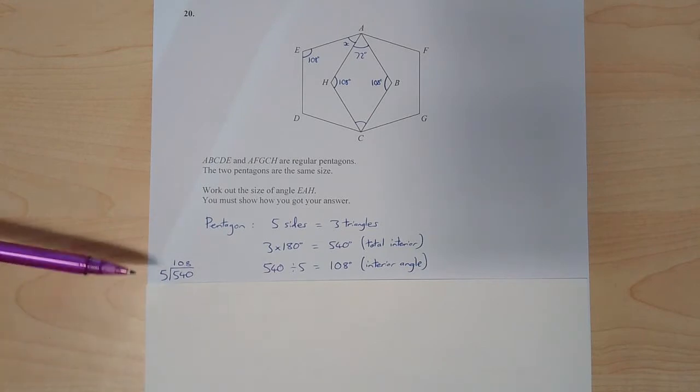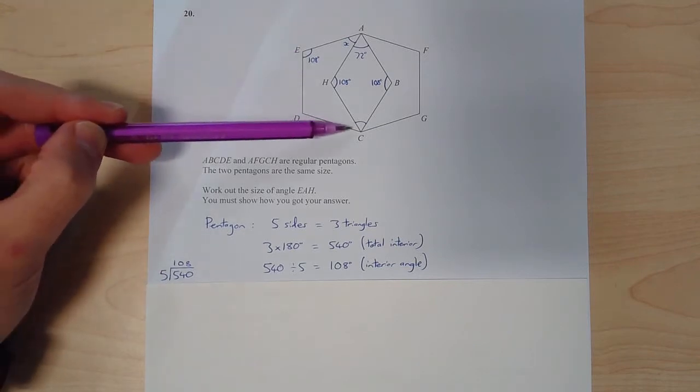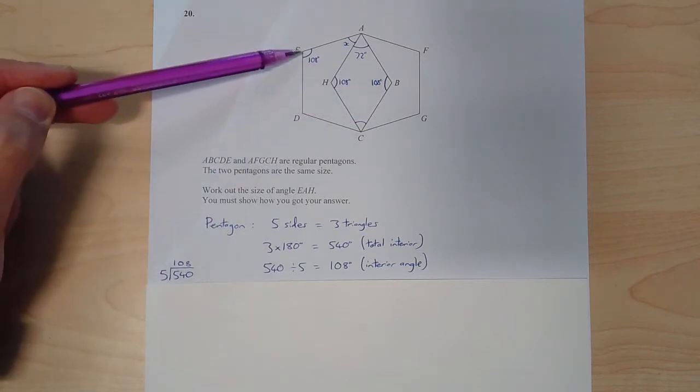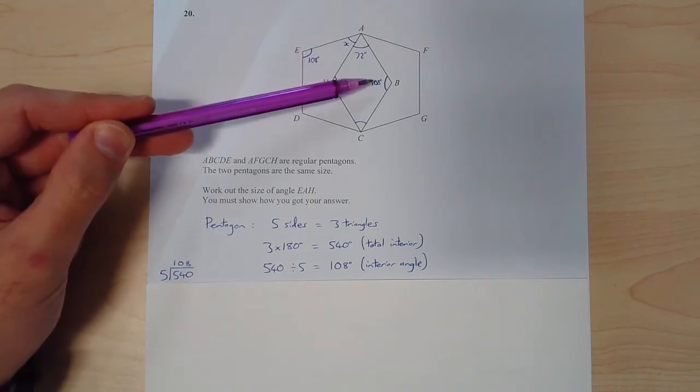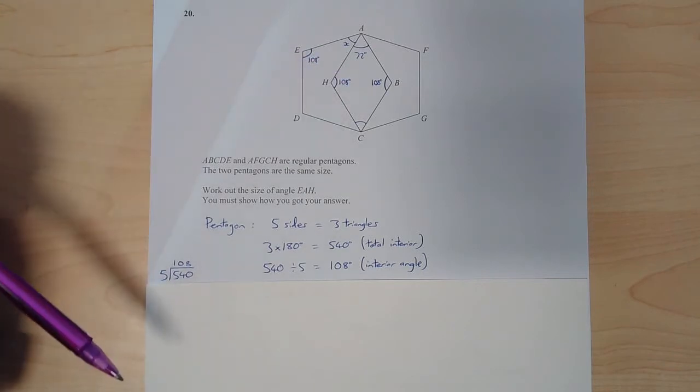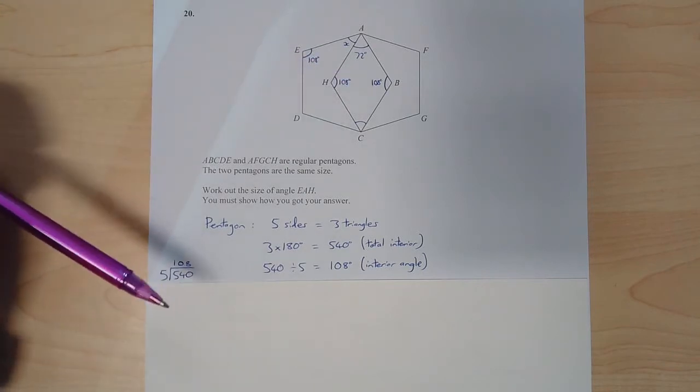This is a non-calculator paper so I've just done the bus stop method over here. So each of these angles are 108. So I've labelled this one 108 and I've also labelled this one here 108.